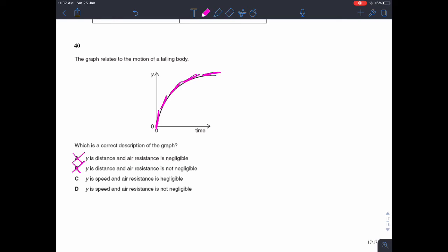It's a speed time graph because then the gradient is acceleration and the acceleration is decreasing in this case. So if the acceleration is decreasing, then that must mean there is some air resistance acting on the body. So as it gets faster, the acceleration gets lower. If there was no air resistance, it would just be a straight line. So Y is speed and air resistance is not negligible. 40D.